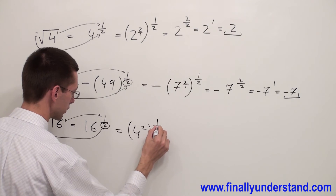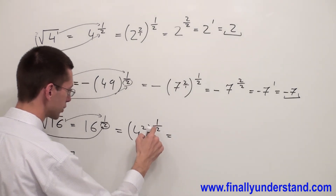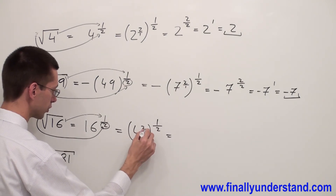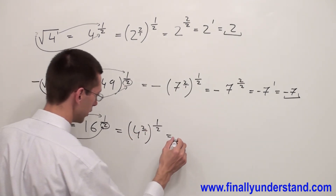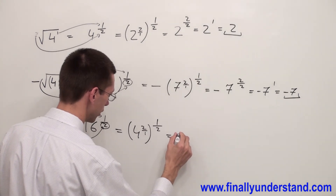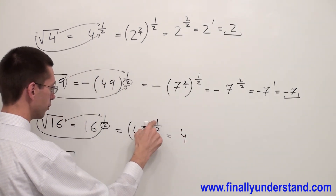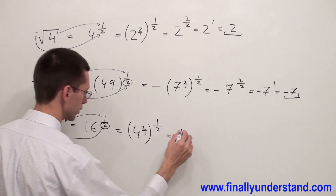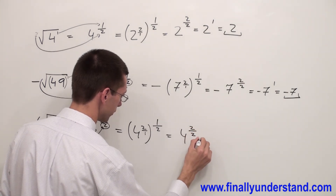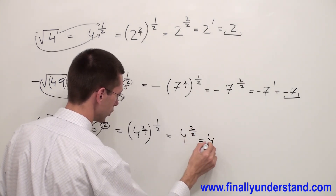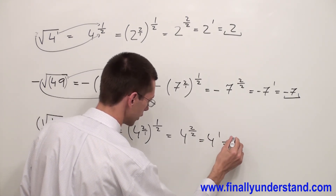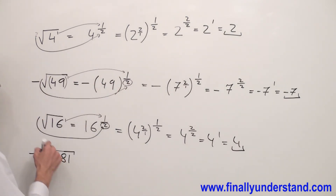And I copy down the exponent. Now, because I have a fraction outside of the parenthesis as an exponent, I'm going to convert the internal exponent to a fraction as well. Anytime we multiply fractions, we have to multiply numerator with numerator and denominator with denominator. That's why I'm going to have 4 with exponent 2 over 2. 2 divided by 2 is 1. 4 to the first power is equal to 4. This is why square root of 16 is equal to 4.